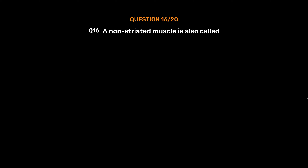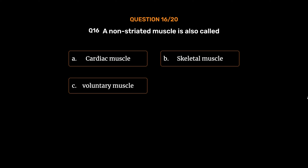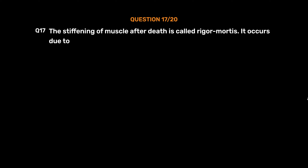Question No. 16. A non-striated muscle is also called: Option A. Cardiac muscle, Option B. Skeletal muscle, Option C. Voluntary muscle, Option D. Involuntary muscle. The correct answer is Option D, Involuntary muscle.